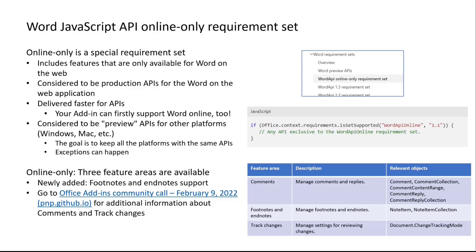You may argue that JS APIs should support multiple platforms instead of just the web, but the reason we are doing so is to provide an opportunity for add-ins built primarily for web users to get things quicker, because web APIs can have more frequent deliveries compared to the desktop version in our internal process. The APIs in this set are production APIs.